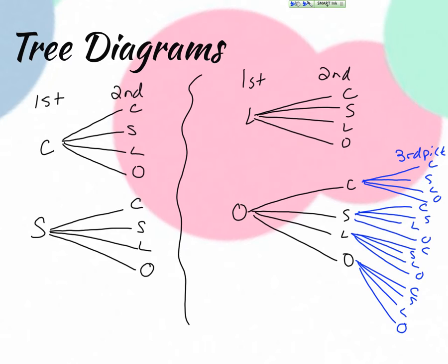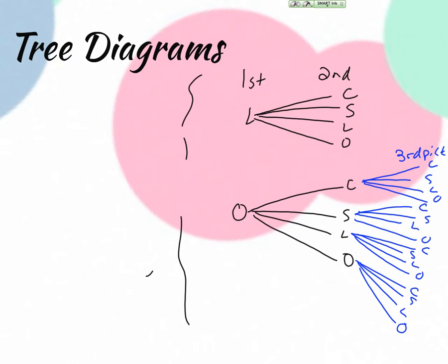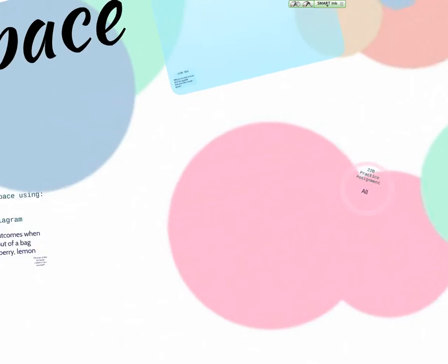And so each different branch represents an option. So I could have orange, cherry, lemon, or orange, cherry, strawberry, or orange, strawberry, cherry. So each different branch as you follow it out is like another outcome. I know that doesn't fit our example, but I just wanted to illustrate that a little bit further. So on your assignment, you're going to get to practice all three ways. You'll have some practice with all of them. Maybe you'll decide what you like best.